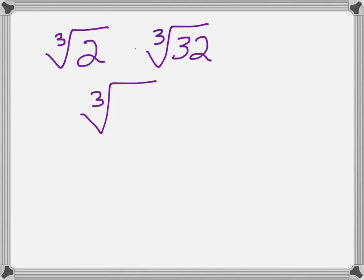So we multiply, we keep our indices the same cubic, the cubic root of 64, and you should know that the cubic root of 64 is 4, because 4 times 4 times 4 is 64.